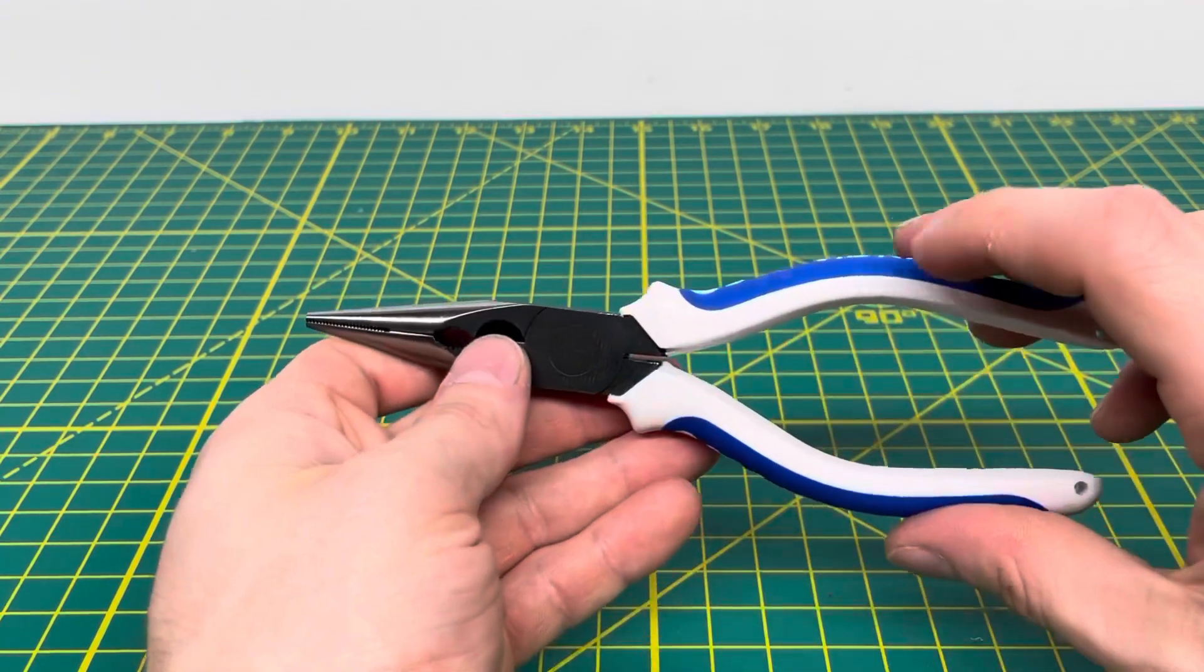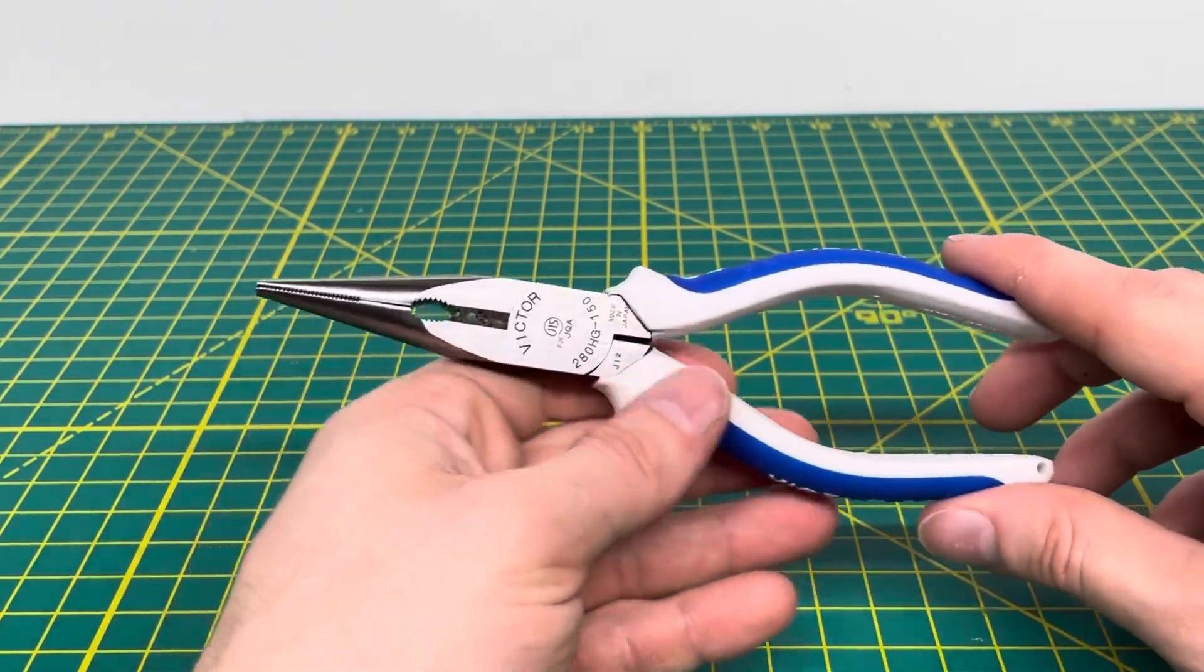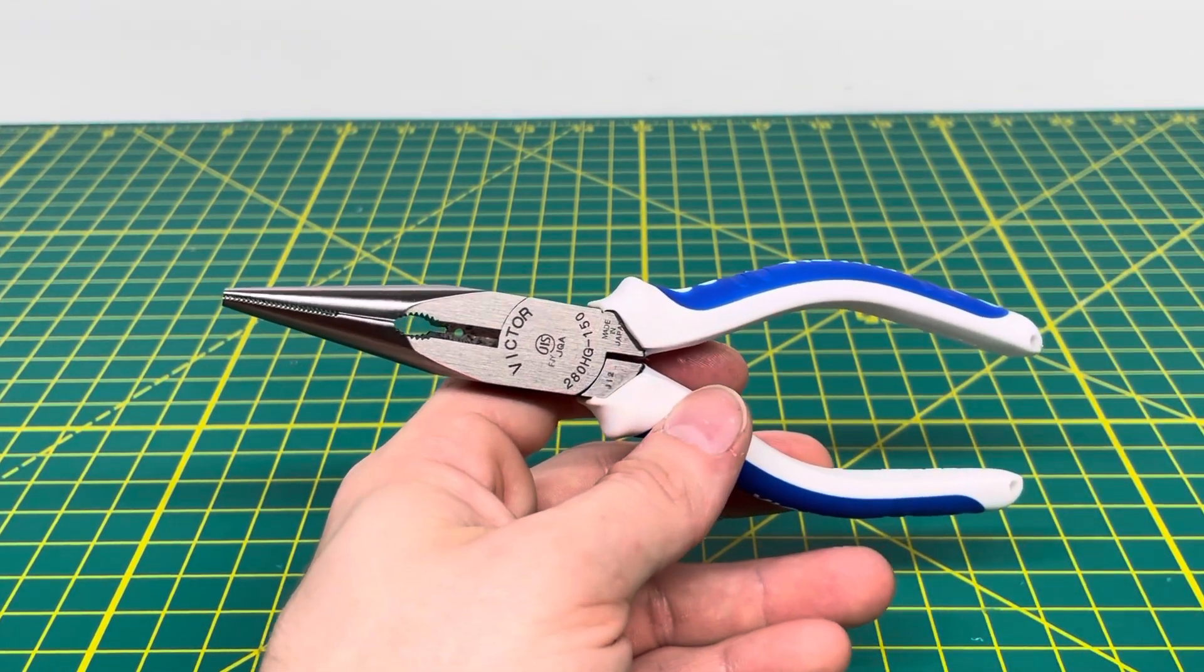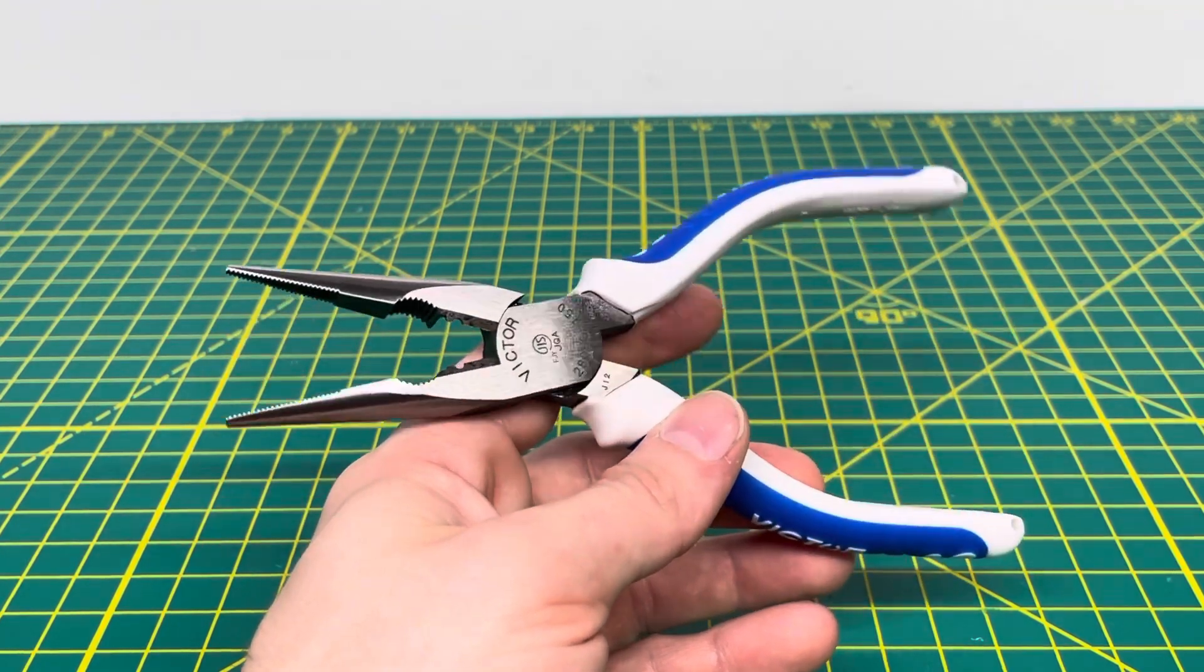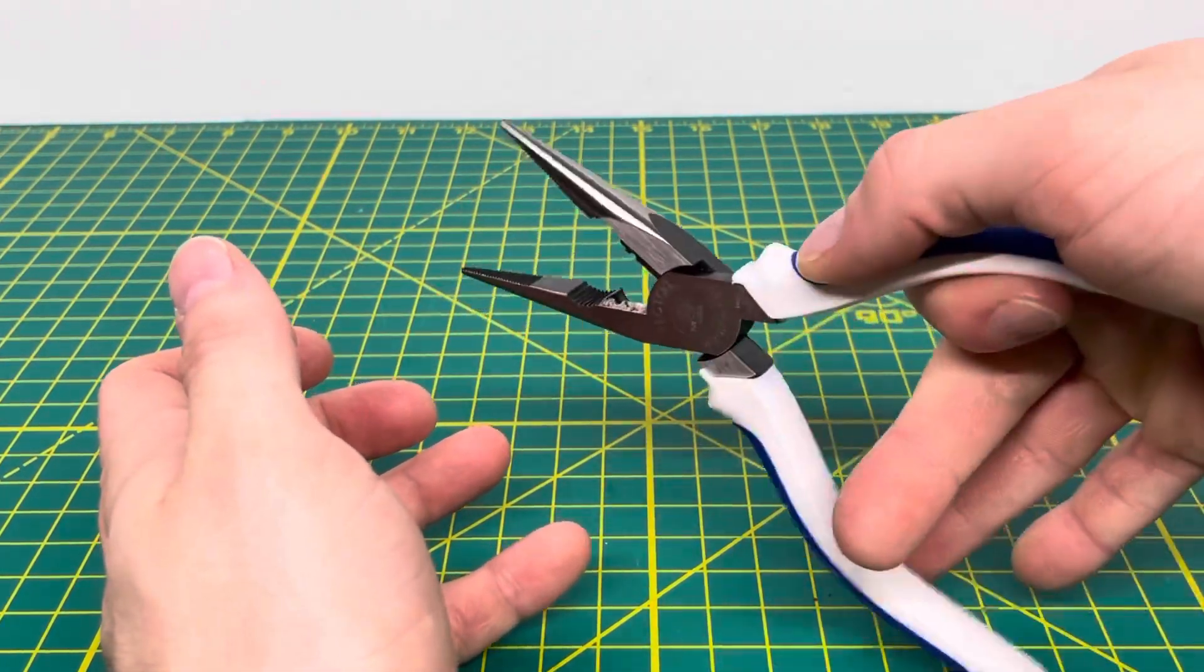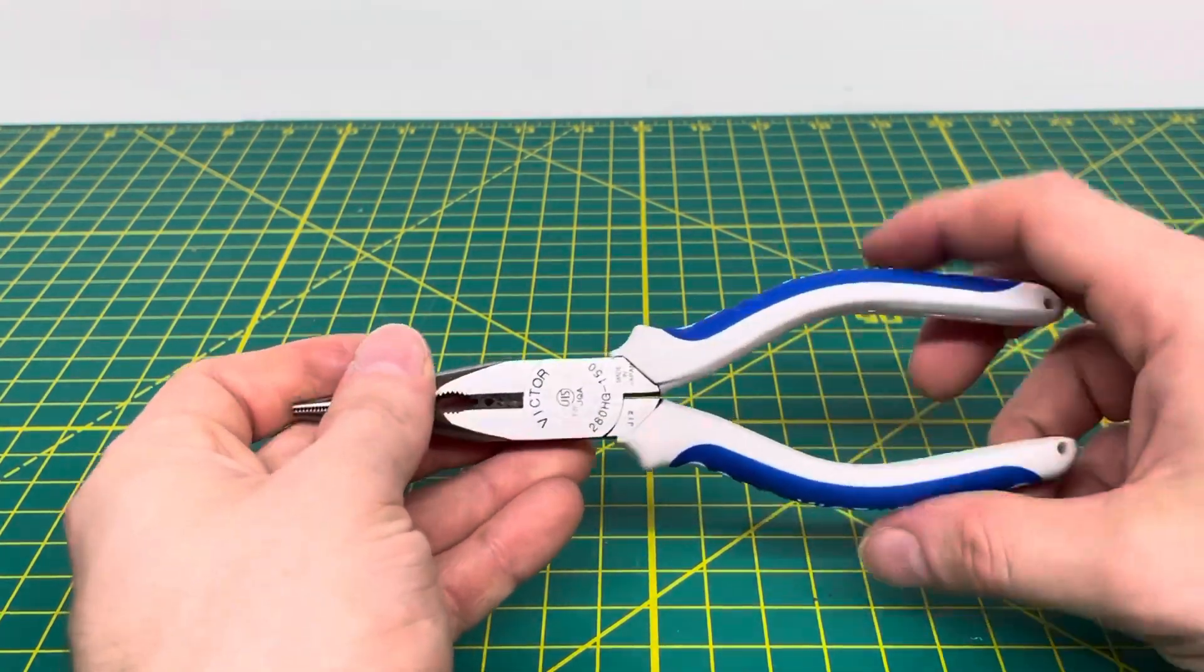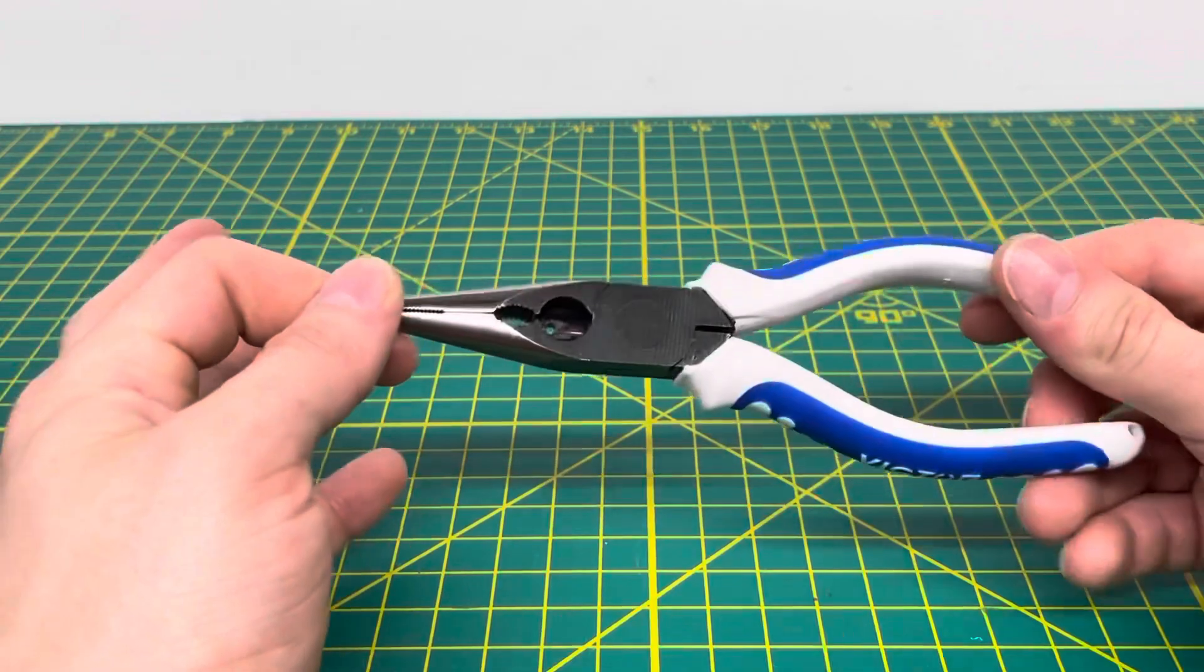These are definitely a nice pair of pliers that Victor has to offer. And Japanese quality tools are up there in the quality of tools. So they are going to be nice. And definitely for the price you pay for these, it's definitely a nice tool. And as you can see, they are super loose. I didn't really have to do that out of the packaging. They just kind of came like that. Nice and loose, which is always great. And no breaking in period whatsoever with these.